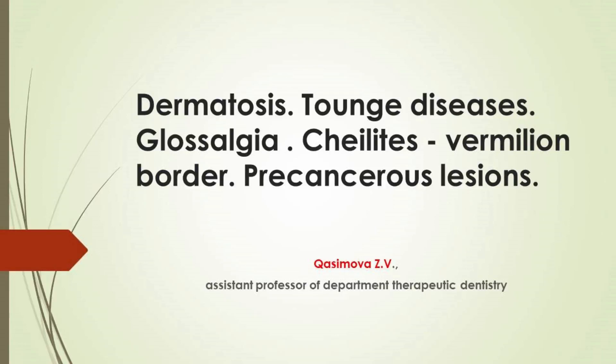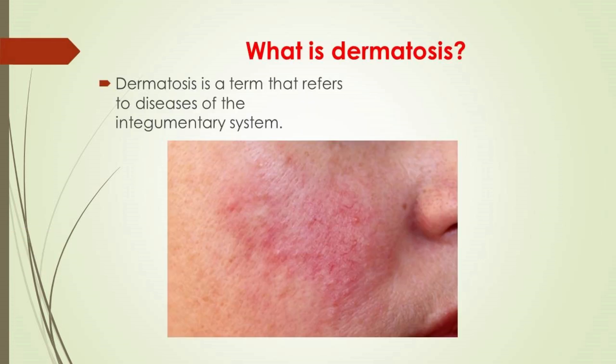What is dermatosis? Dermatosis is a term that refers to diseases of the integumentary system. This classification includes everything on the surface of the body: skin, nails, and hair.